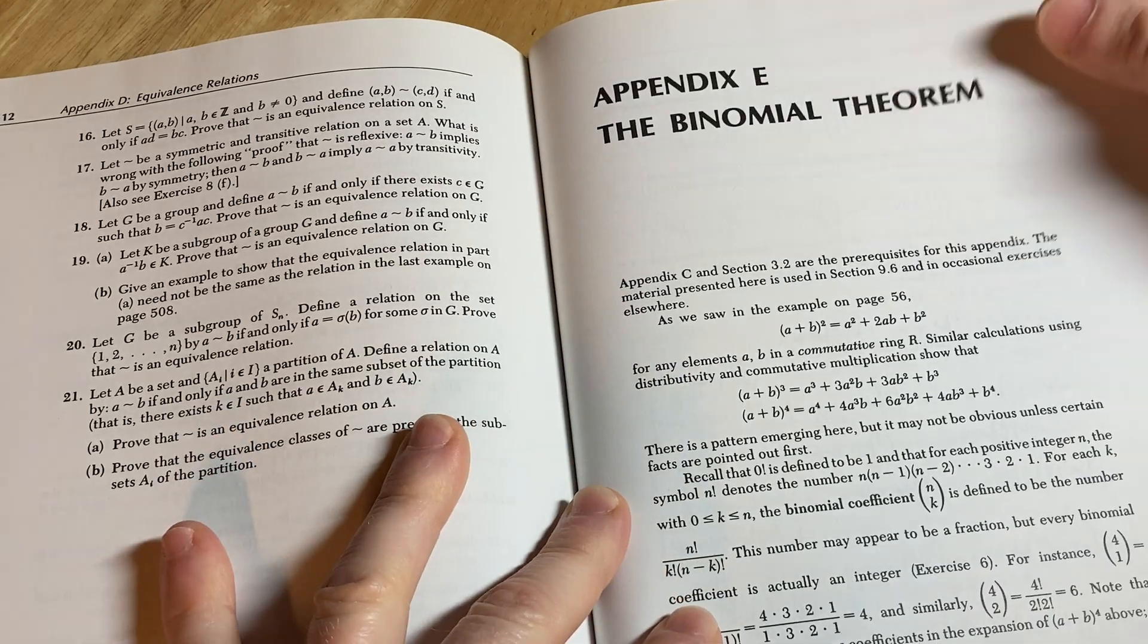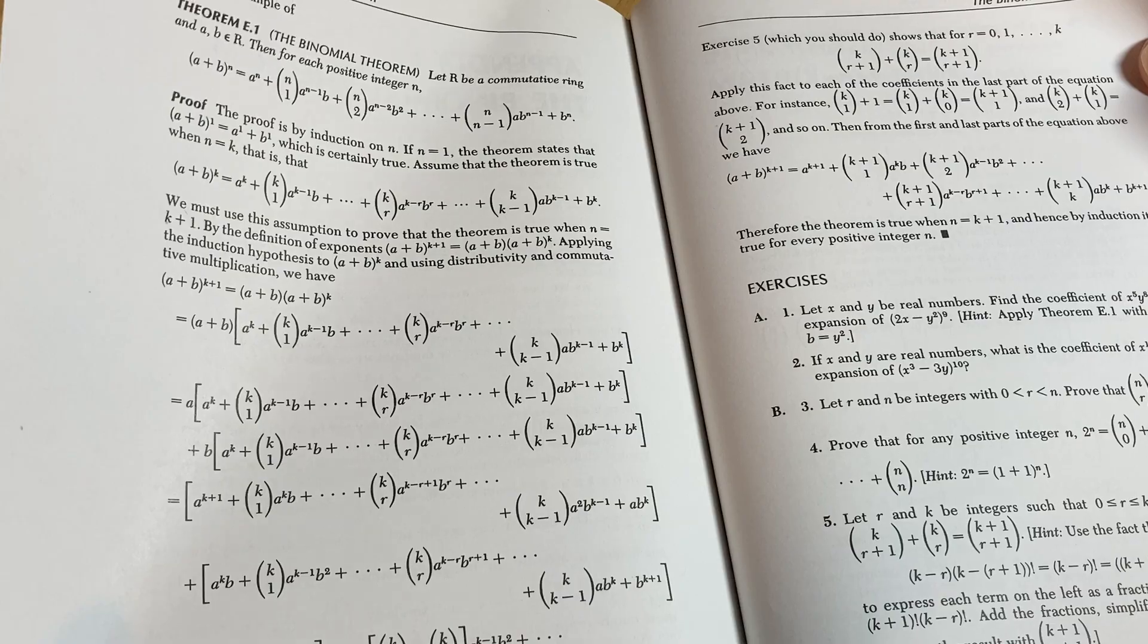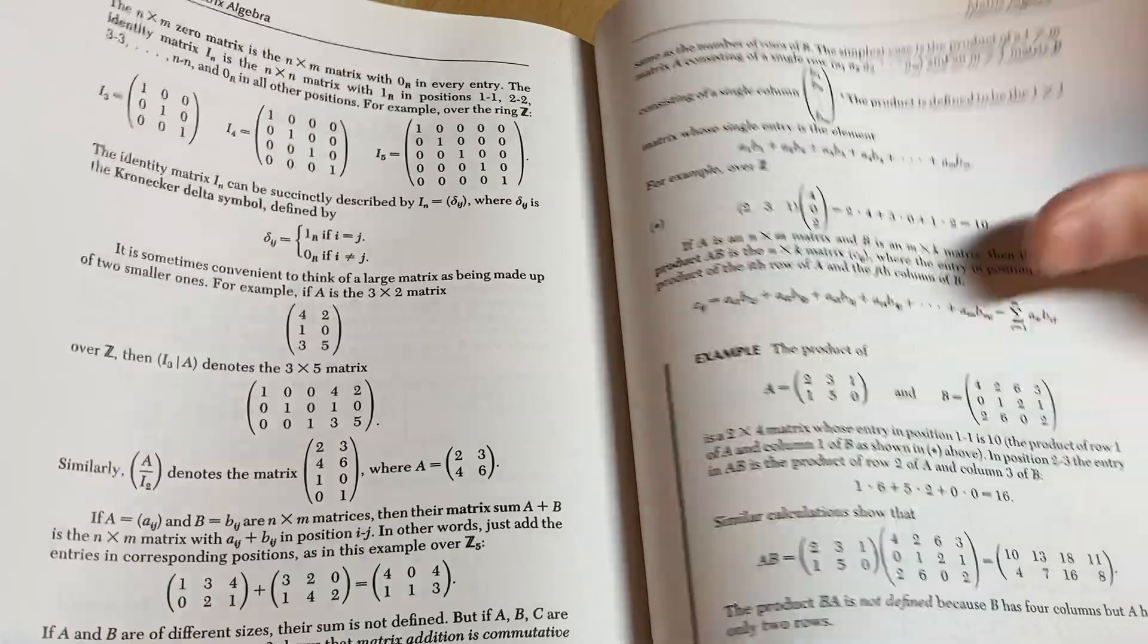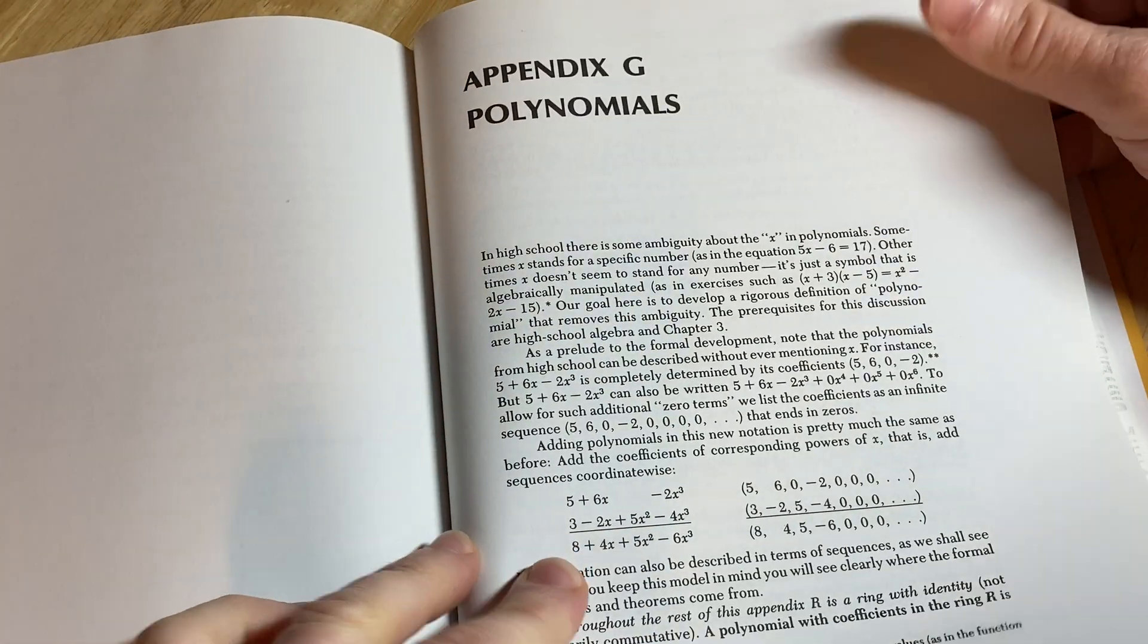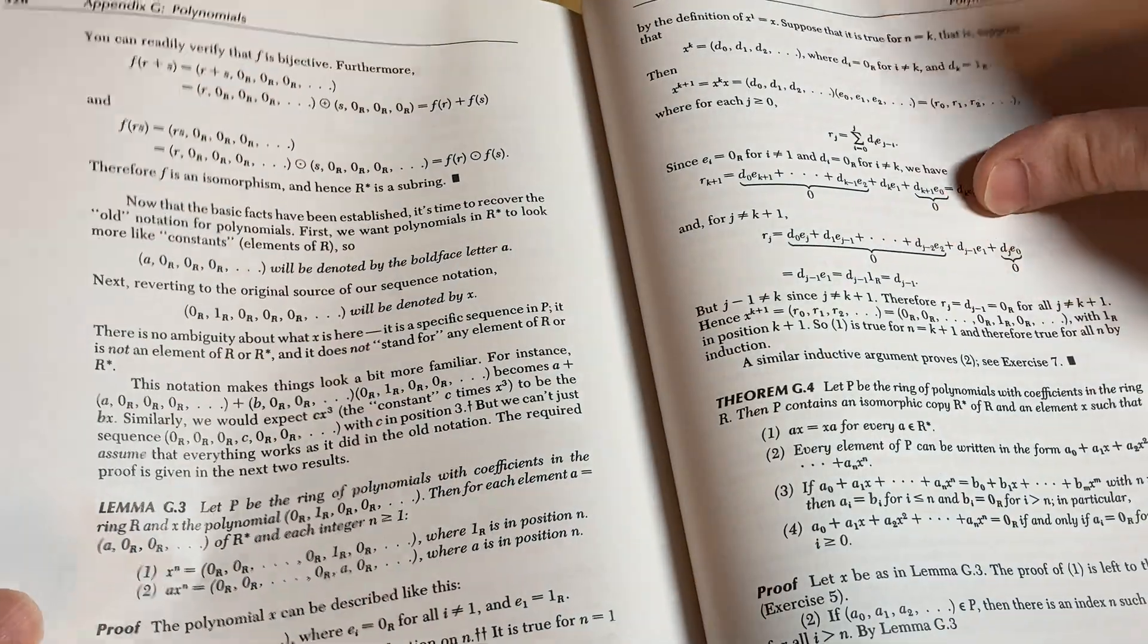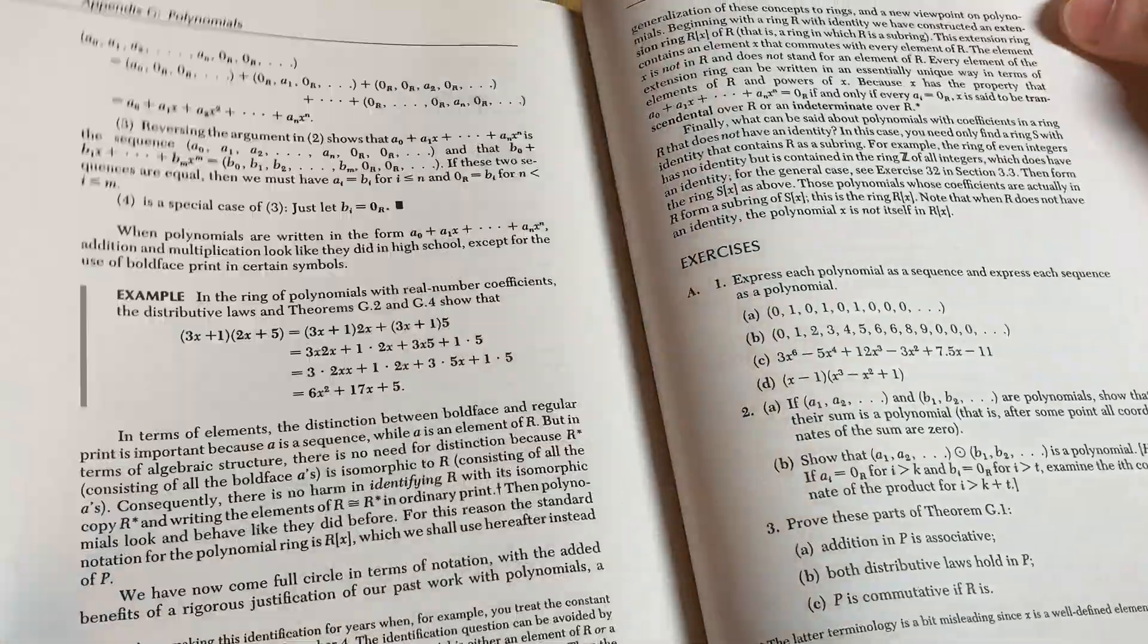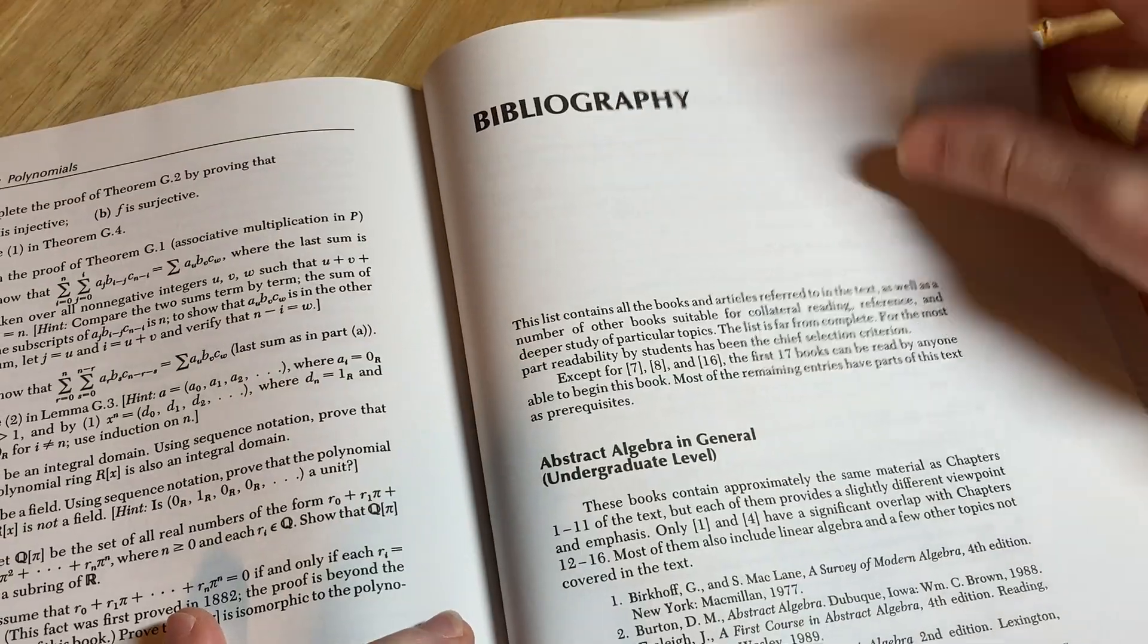Here's one on the binomial theorem. It's a long formula. It's a powerful formula. Matrix algebra. Polynomials. Yeah. So little appendices you can read and sit down and work through. Yeah. Bibliography.